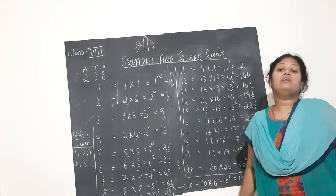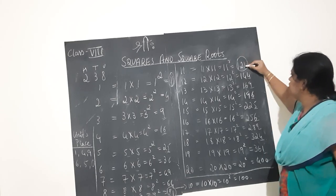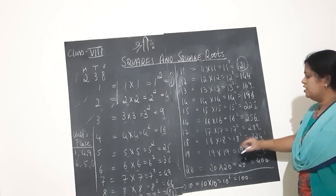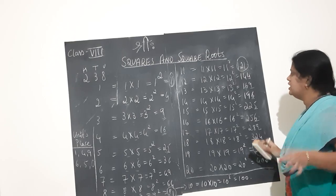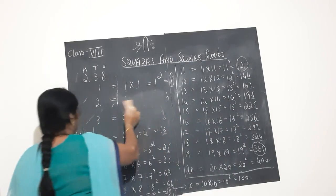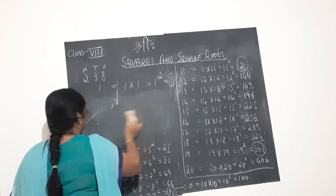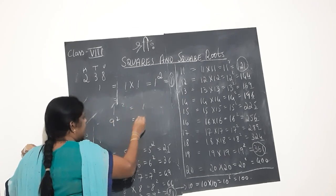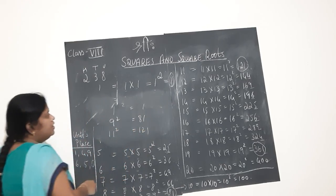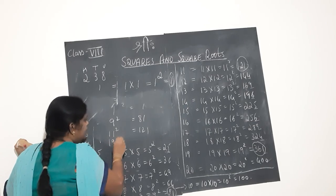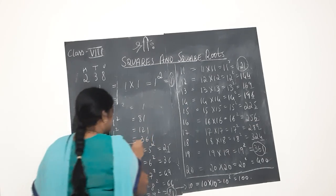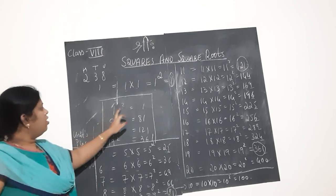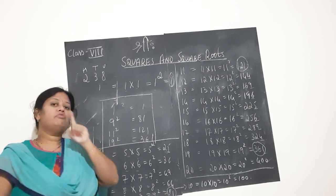So, 1 squared we try; next, 9 squared gives 81. Of course, 11 squared also has 1 in the units place — that is 121. Similarly, 19 squared is 361. By selecting these square numbers, I find that the squares of these numbers all have 1 in their units place: 1, 9, 11, and 19.